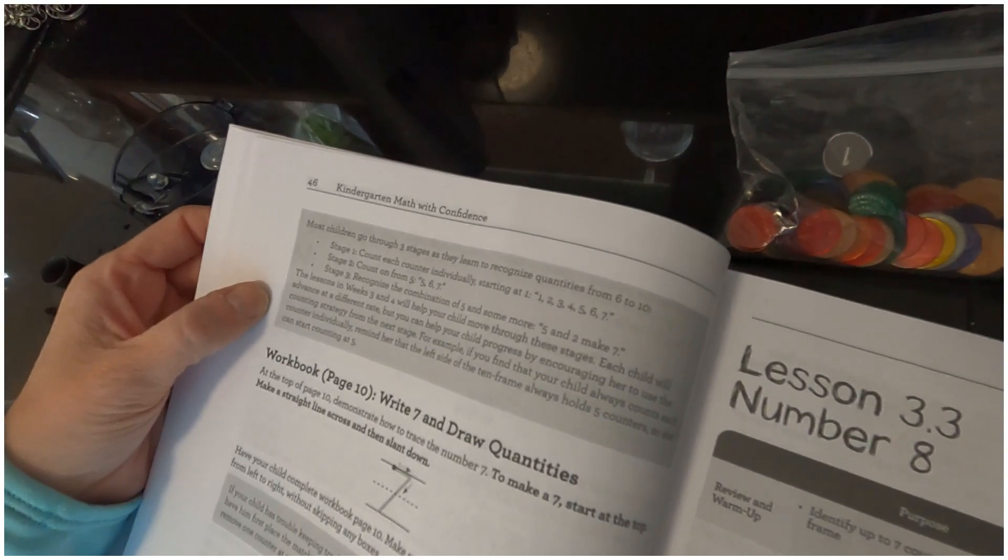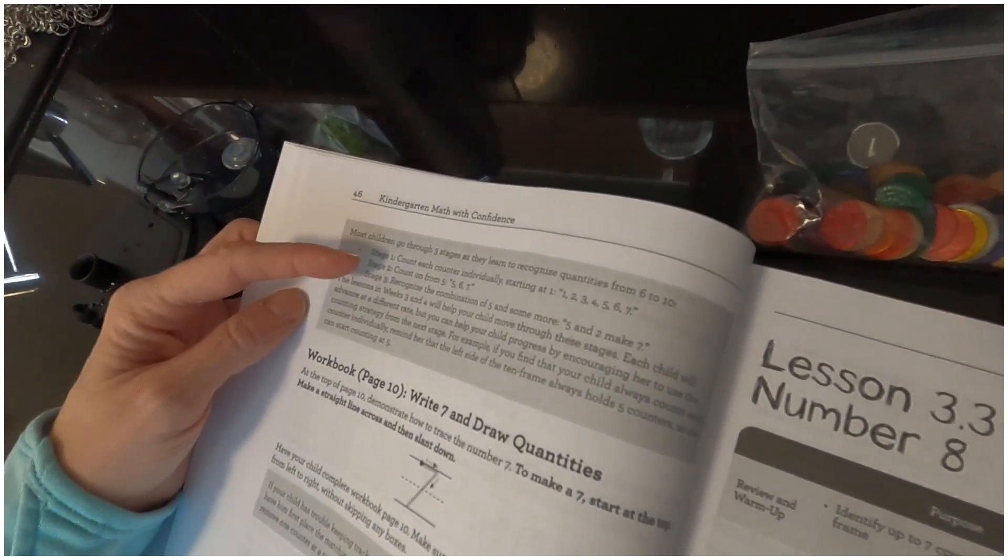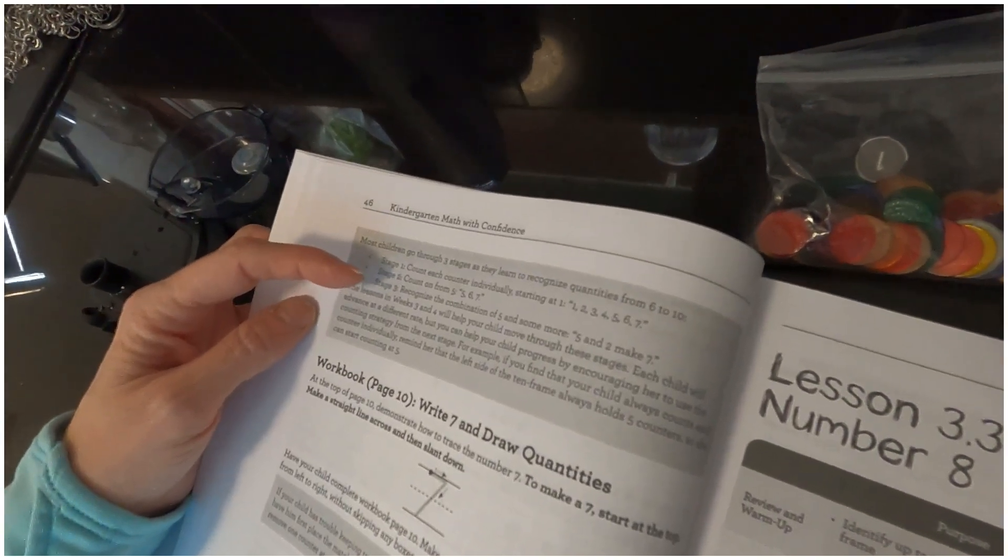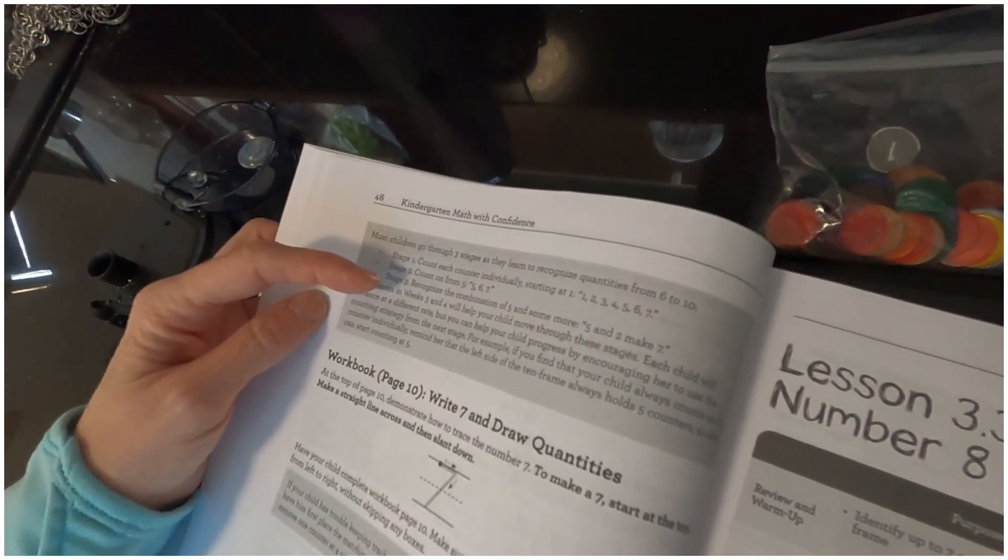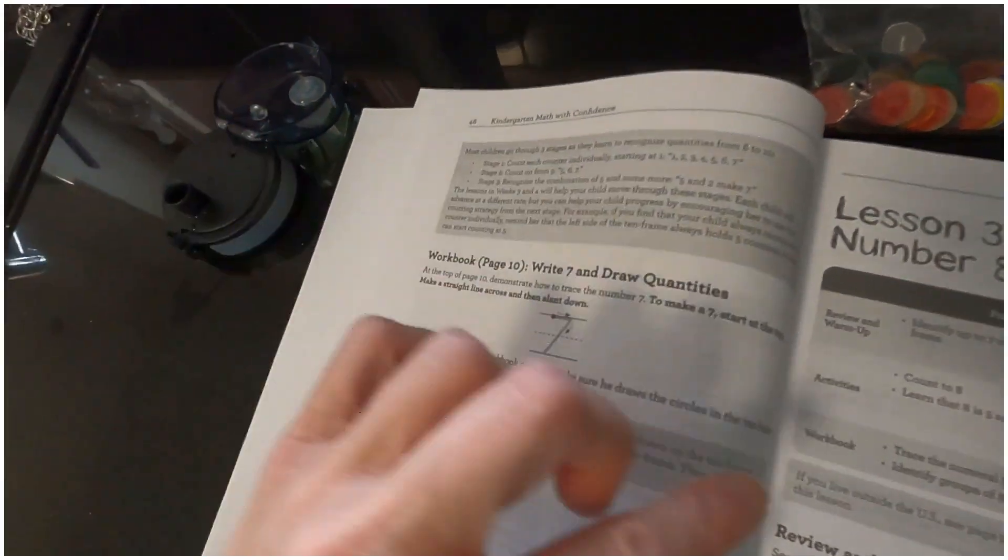And then they're going to go through. See, now these boxes explain a lot of stuff. 'Most children go through three stages as they learn to recognize quantities from six to ten. They count each counter individually, then they count on from five, six, seven. And stage three is to recognize the combination of five.'